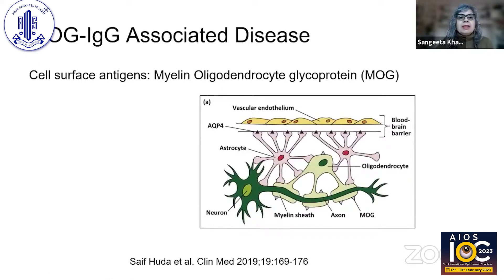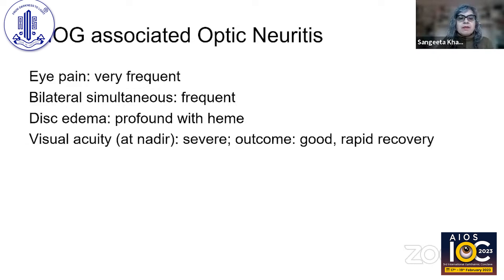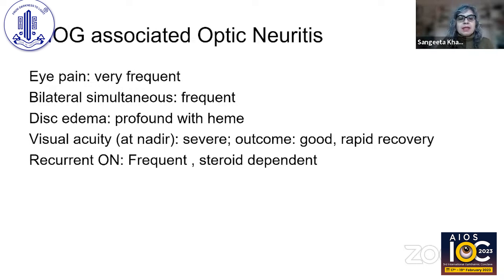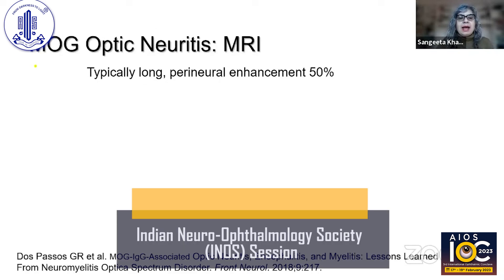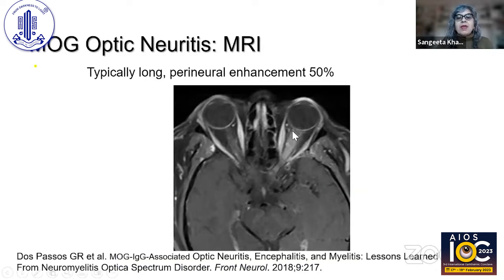MOG antibody — myelin oligodendrocyte glycoprotein — is a cell surface antigen present on the oligodendrocyte, and antibodies formed to this cause MOG-associated disease. With MOG, they often have eye pain, bilateral disease is common, and disc edema is profound. Vision can be very severely affected, but the outcome is much better than aquaporin-4 atypical optic neuritis. Recurrences are frequent. On MRI orbit, you have long segment disease with perineuritis and spillover into the orbital fat.